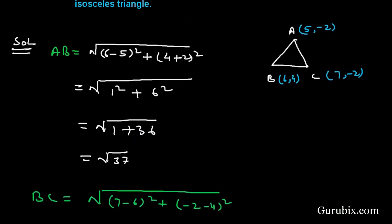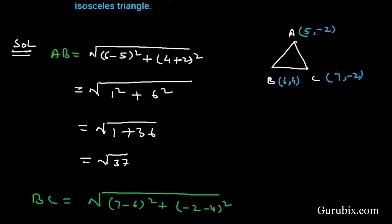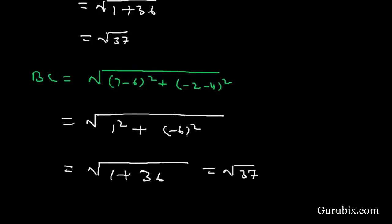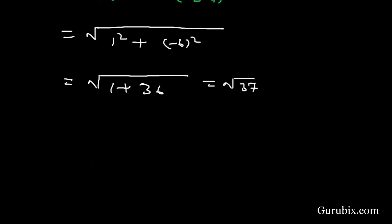Here we need not find the distance between A and C because we have already calculated the two sides which are equal. Here AB equals square root of 37 and BC also equals square root of 37. We know that a triangle is called isosceles triangle if two of its sides are equal. Here we observe that since AB equals BC, therefore the triangle ABC is an isosceles triangle.